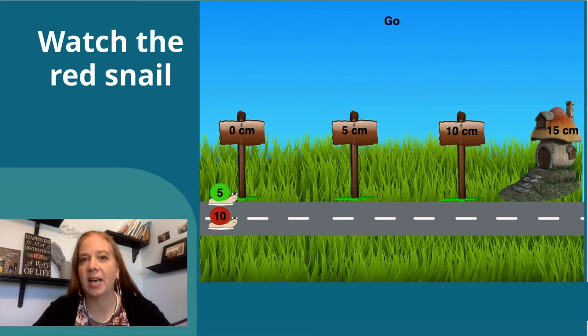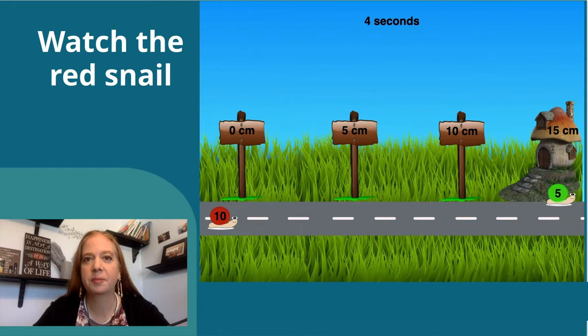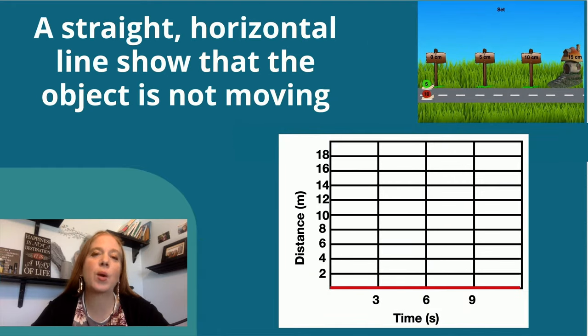Watch the red snail again. Notice it doesn't seem to be moving. A straight horizontal line shows that an object is not moving.